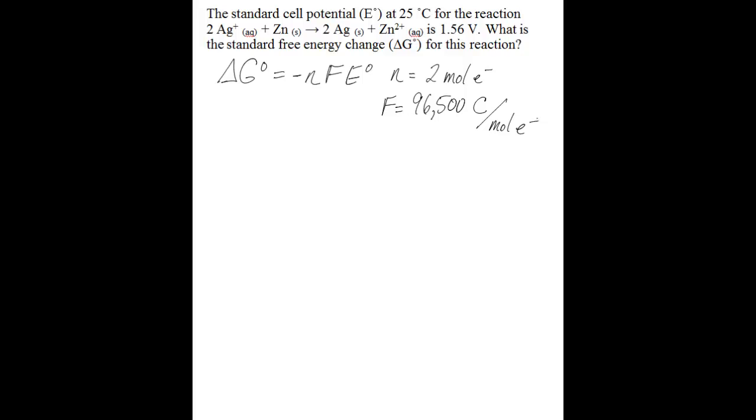All you need to do is substitute them in. So delta G-naught is equal to negative 2 times 96,500 coulombs per mole of electrons, and then you can multiply that by your standard cell potential that you're given, which is 1.56 volts.